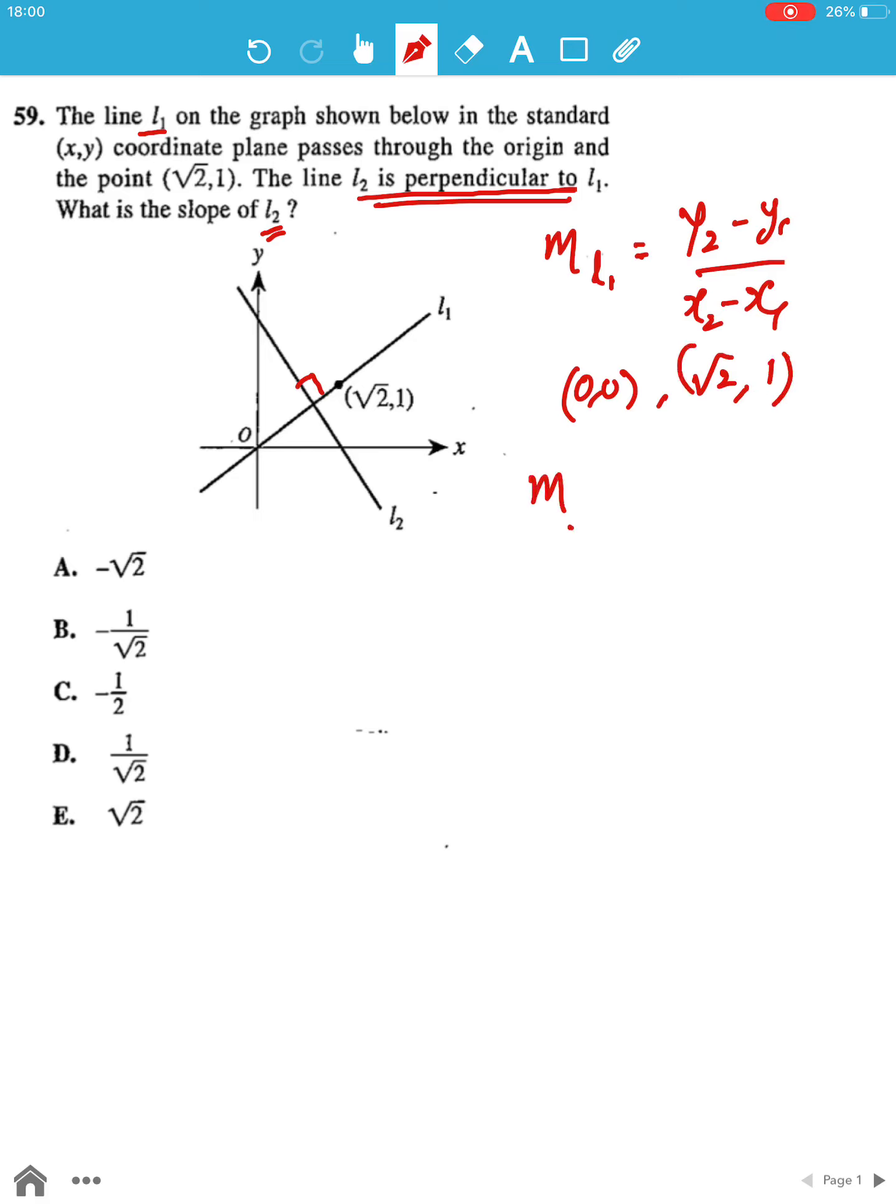So M of L1 is equal to y2, which is 1 minus 0, over x2, which is root 2 minus 0. So the gradient of L1 is equal to 1 by root 2.